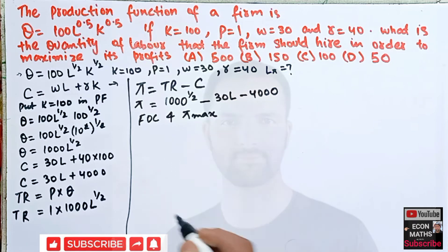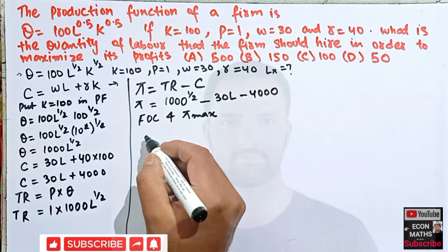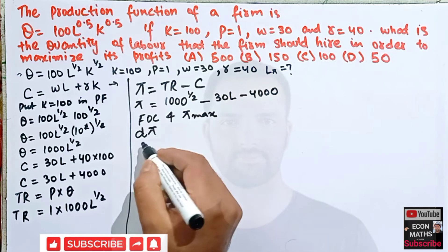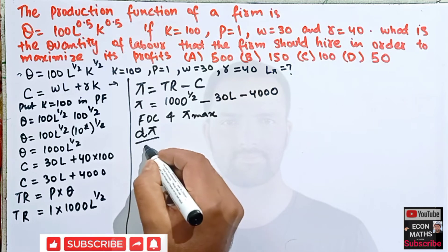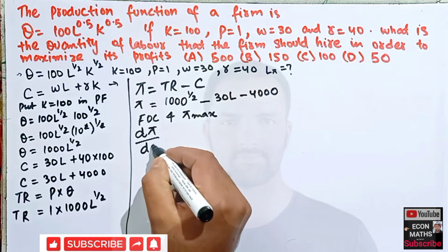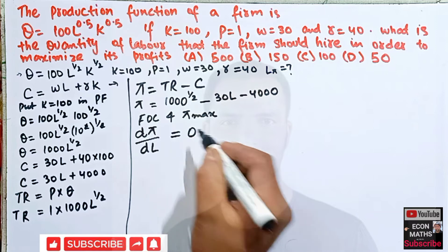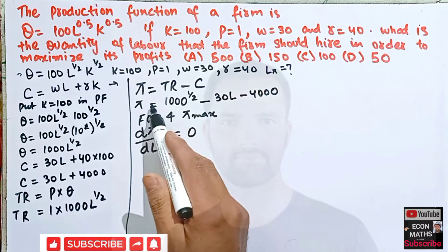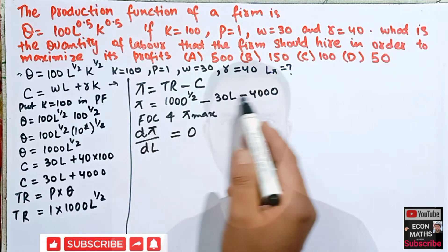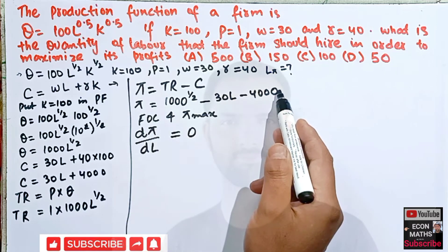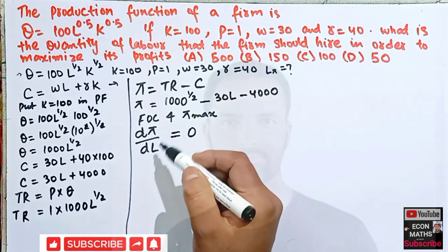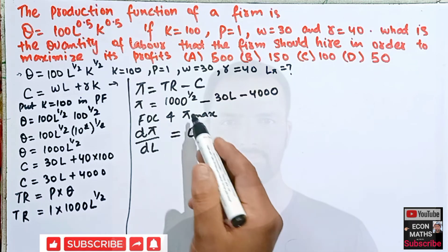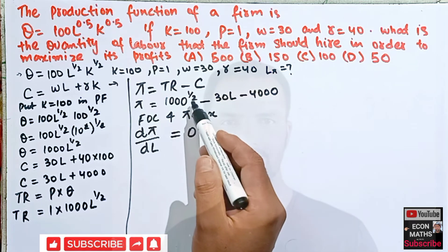The first-order condition for profit maximization requires that the derivative of the profit function with respect to labor L be equal to zero. So we differentiate the profit function with respect to L and set it equal to zero.